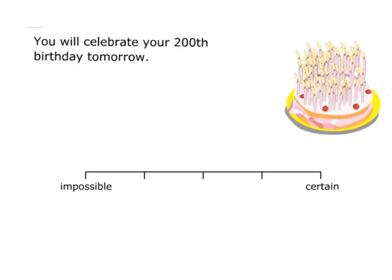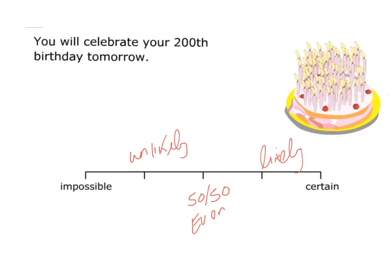We're going to do a few questions. The first one: what is the probability you will celebrate your 200th birthday tomorrow? You can have impossible, certain, 50-50 (another word for that is even), unlikely, or likely. What's the chances you will celebrate your 200th birthday tomorrow? Well, the chance of that happening is pretty much impossible. The reason for that is nobody has ever really lived to be 200, so I'm going to place it here.